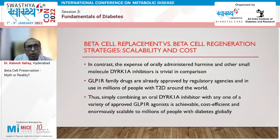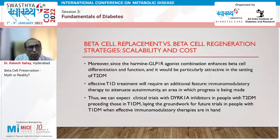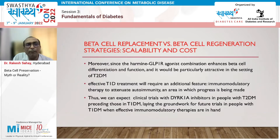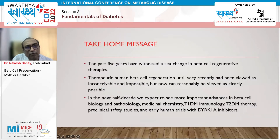The combination of harmine and GLP-1 receptor analogue is probably the best combination that enhances beta cell differentiation and function. It will probably be particularly attractive in the setting of type 2 diabetes, whereas in type 1 diabetes it may not be as attractive.